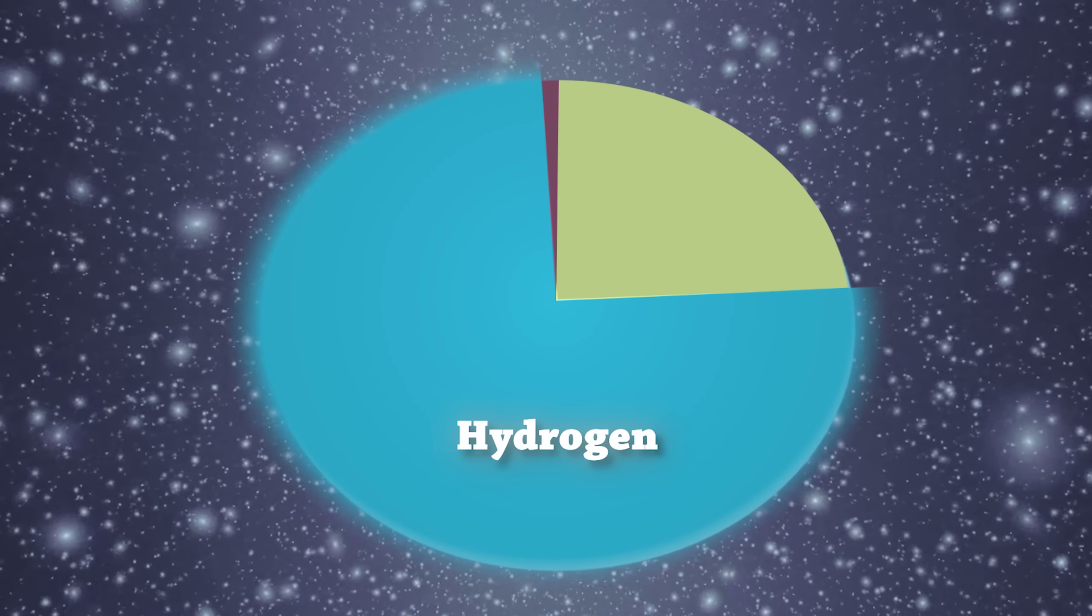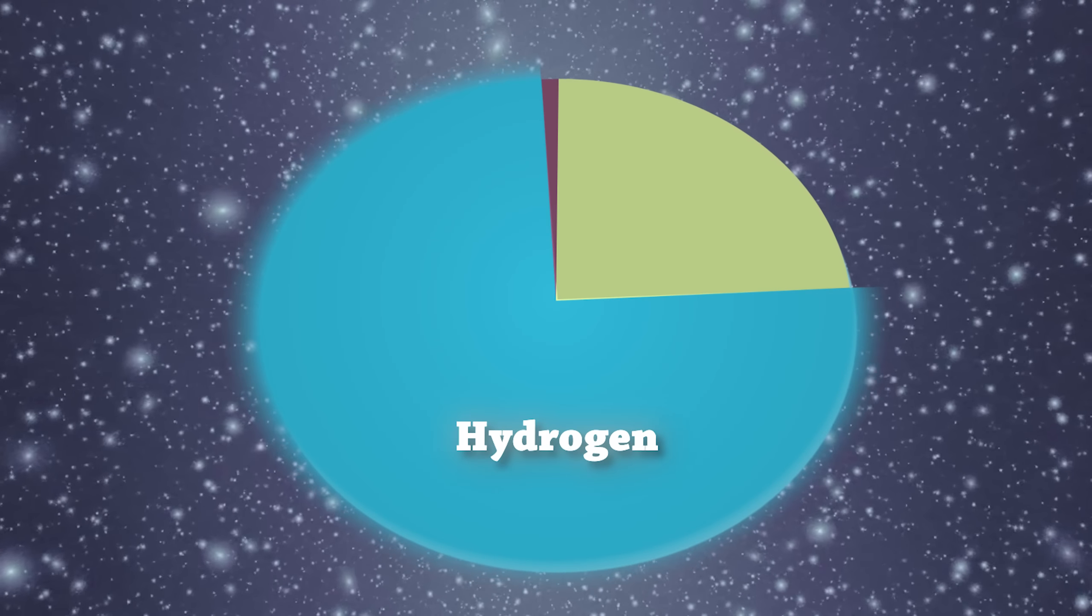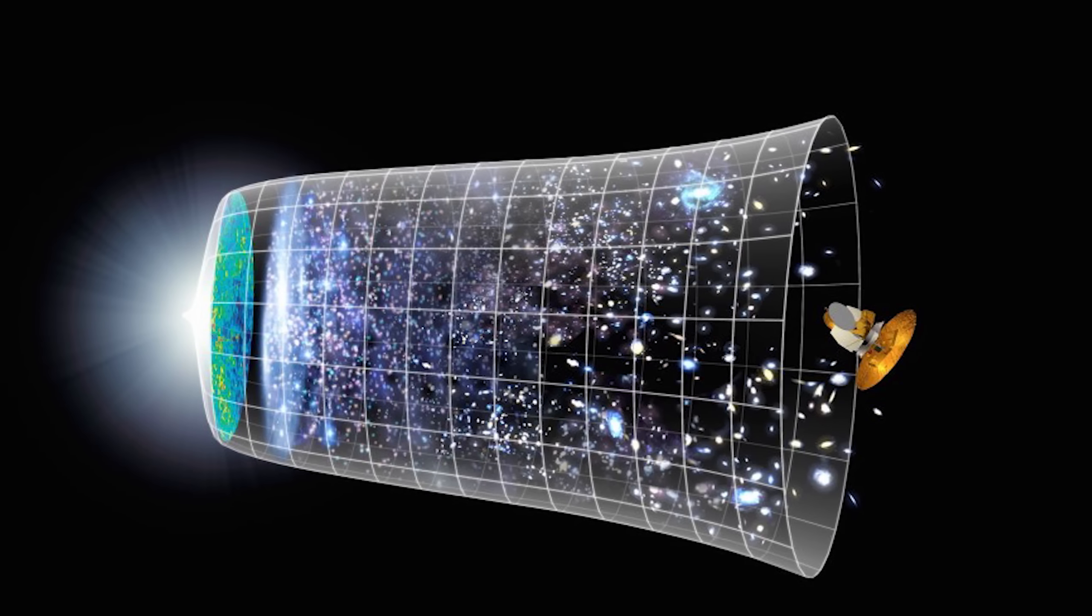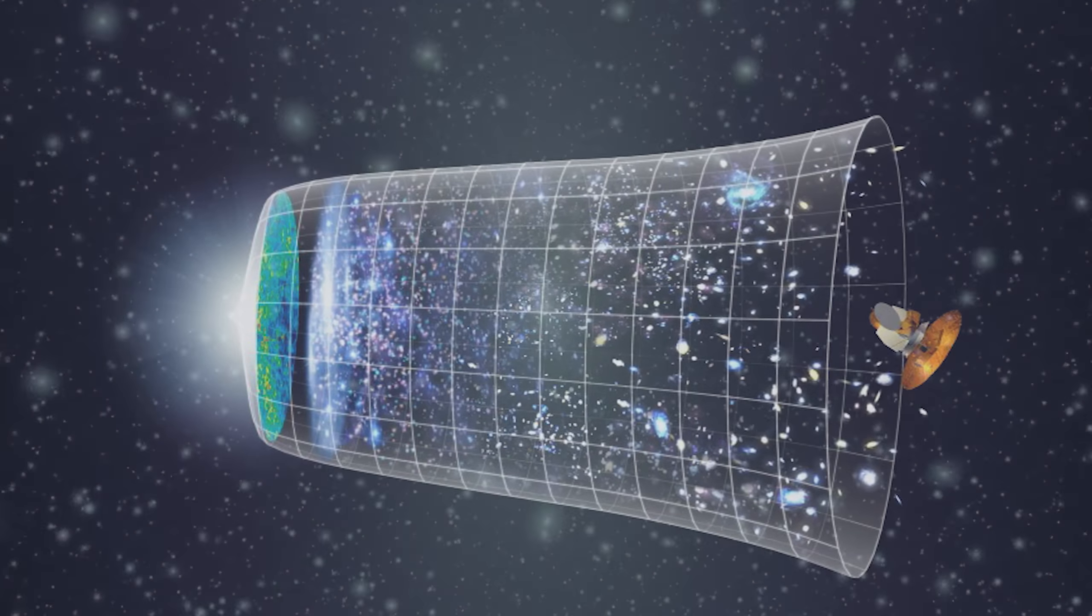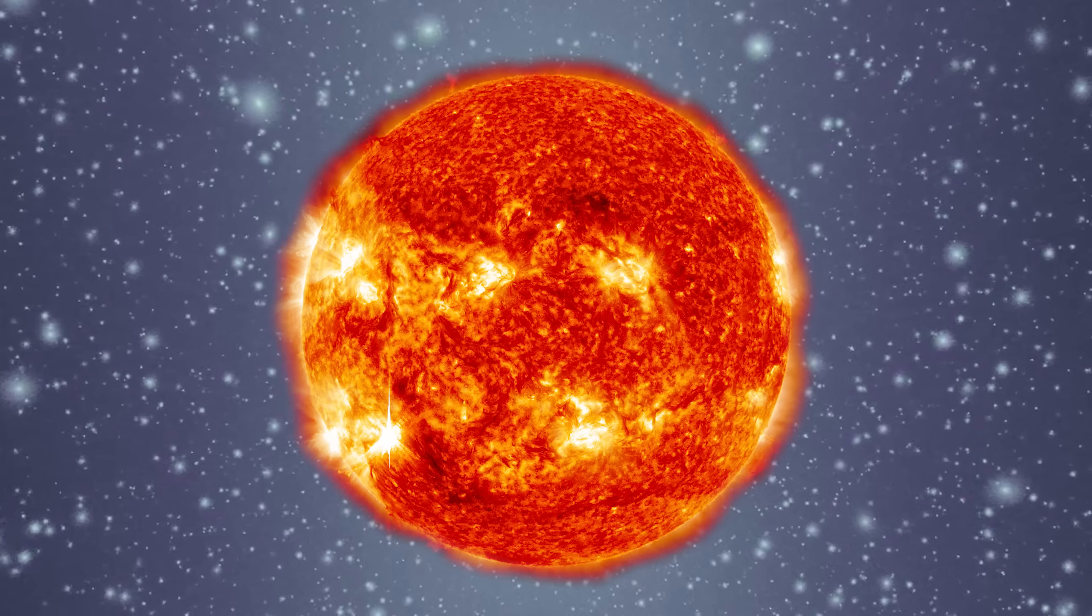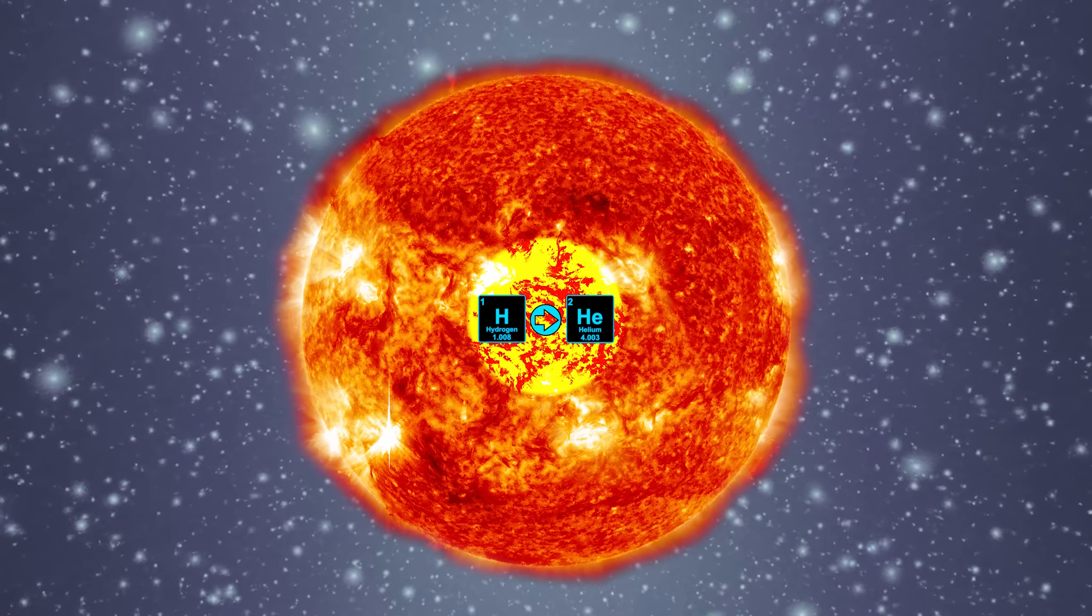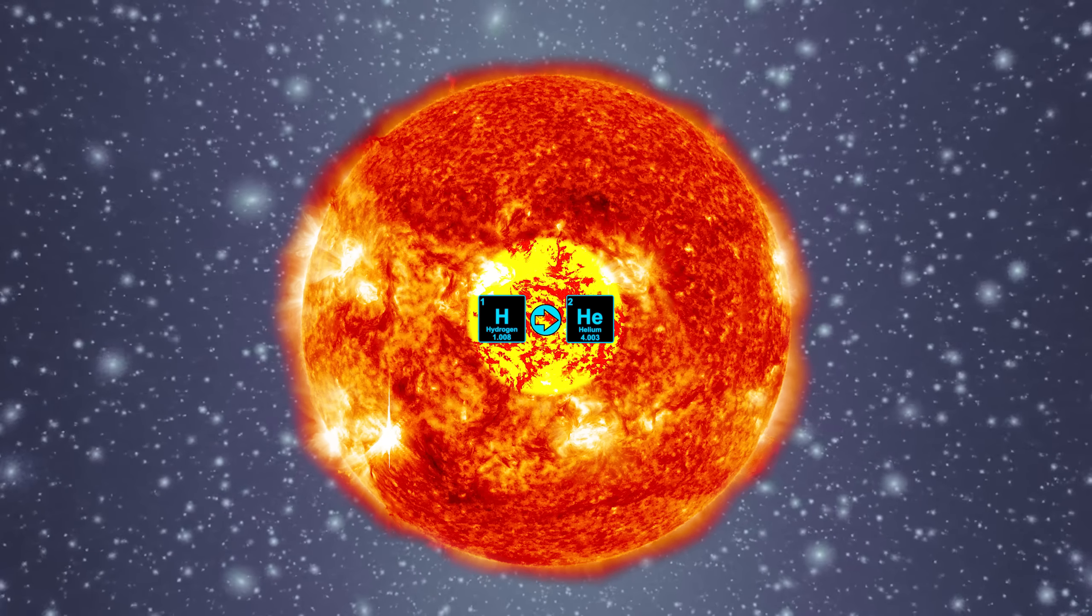Stars consist mostly of hydrogen, which was already present in huge amounts right after the Big Bang. Our Sun is currently fusing hydrogen into helium within its core and it'll do so for the majority of its lifetime.